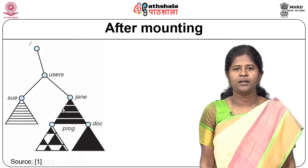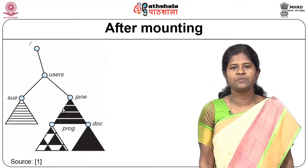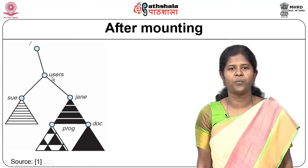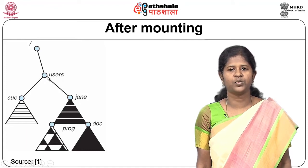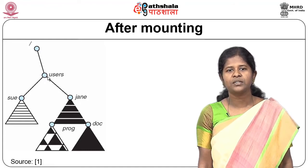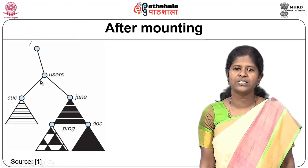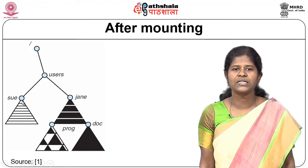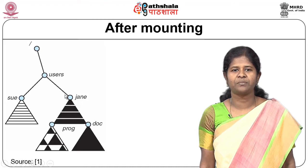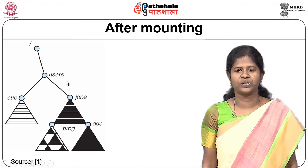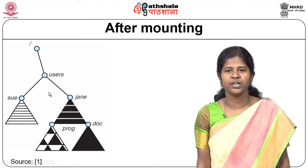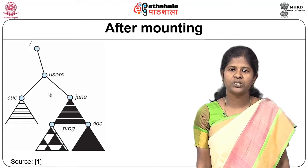We will see how the directories or file systems will be seen after mounting. In the earlier example, users was the mount point. Users had other existing subdirectories, but those subdirectories are now hidden. You have the subdirectories now as su and jane — these are actually the subdirectories beneath the root in the new file system which was mounted onto the existing file system. This mounting helps in logically attaching one file system onto another file system.